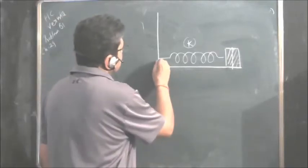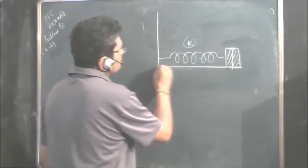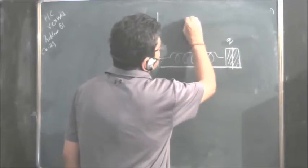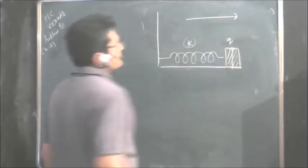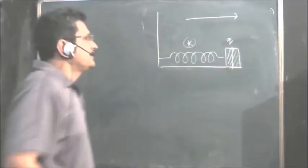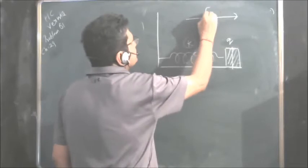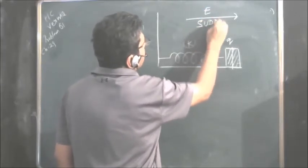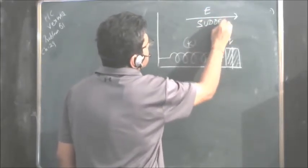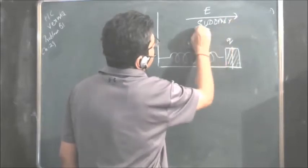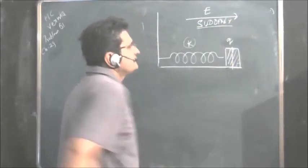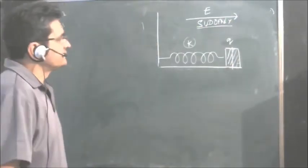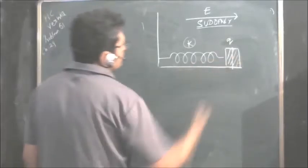In this problem there is a mass with a charge Q and there is an electric field E which is suddenly switched on. This word 'suddenly' has to be read very carefully in all questions — what happens when this is done?